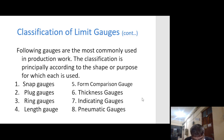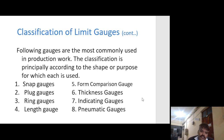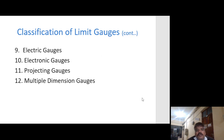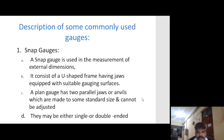The most commonly used gauges in production work include: snap gauge, plug gauge, ring gauge, length gauge, form comparison gauge, thickness gauge, indicating gauge, pneumatic gauge, electric gauge, electronic gauge, projecting gauge, and multiple dimension gauge.